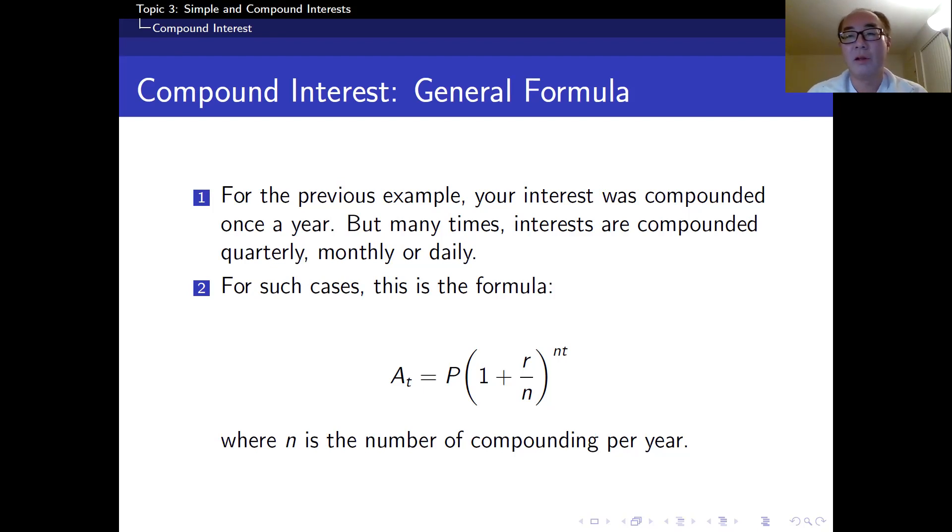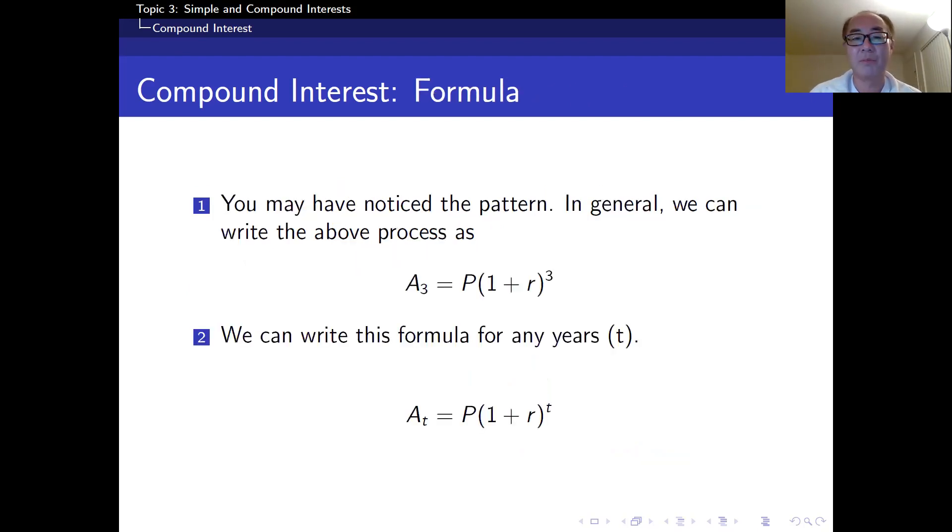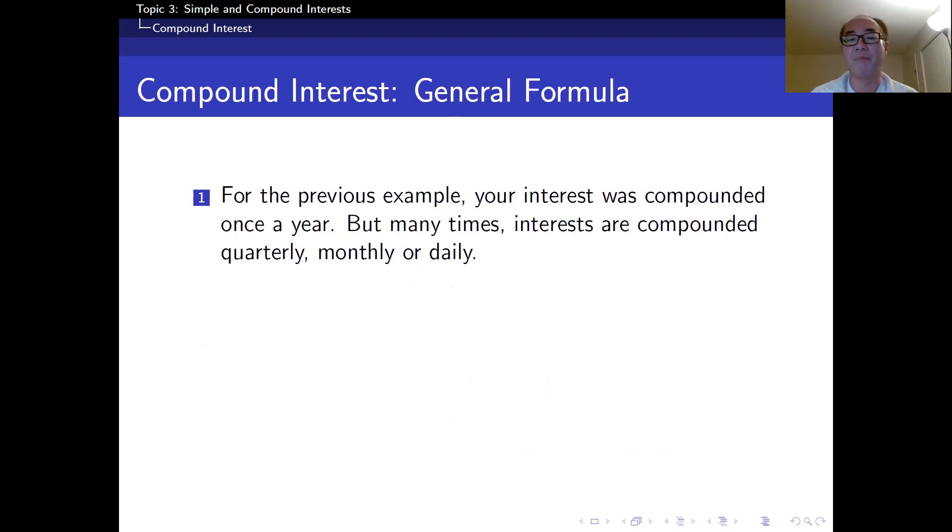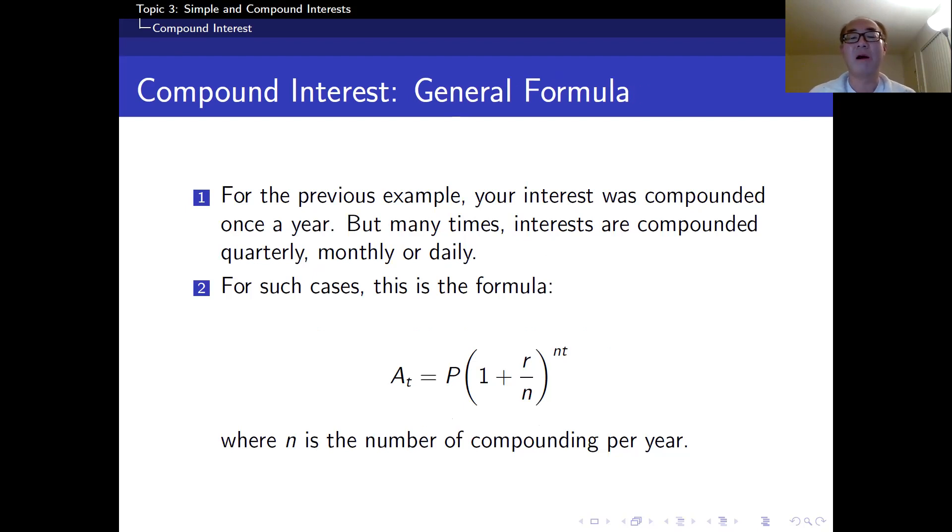Then the power here is N times T, not simple T. The annual case is actually a special case of this formula. Because previously, we had N is equal to 1. Then we get the previous formula. Let's look at this. A sub T is equal to P times 1 plus R to the power T. But now we have N, which is different from 1. That's why we have this formula. A sub T is equal to P times 1 plus R over N to the power N T.